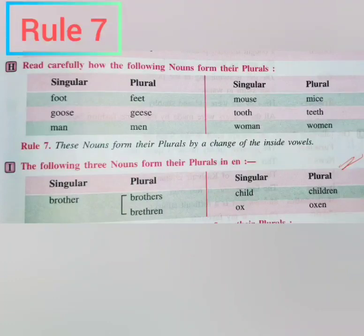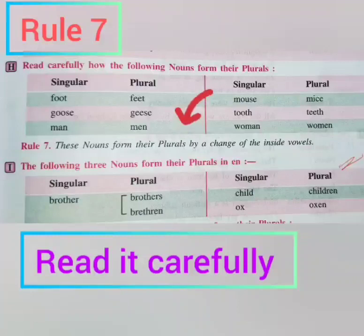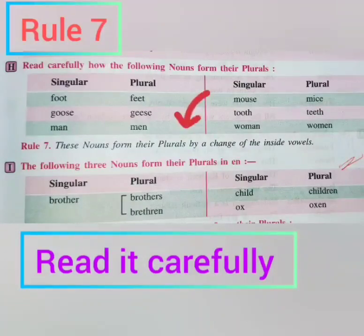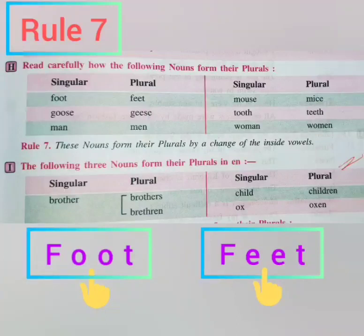So students, in the recent video lessons, we have already completed six rules on how we can change our singular into plurals. So today we will continue from rule number seven. Rule number seven says nouns form their plurals by a change of the inside vowels. Now we will be studying about some nouns which form their plurals by a change in the inside vowels. Earlier we were studying about those words in which there was a shift in the outside vowels, but here we have to see the changes in the inside vowels. So let's see the examples.